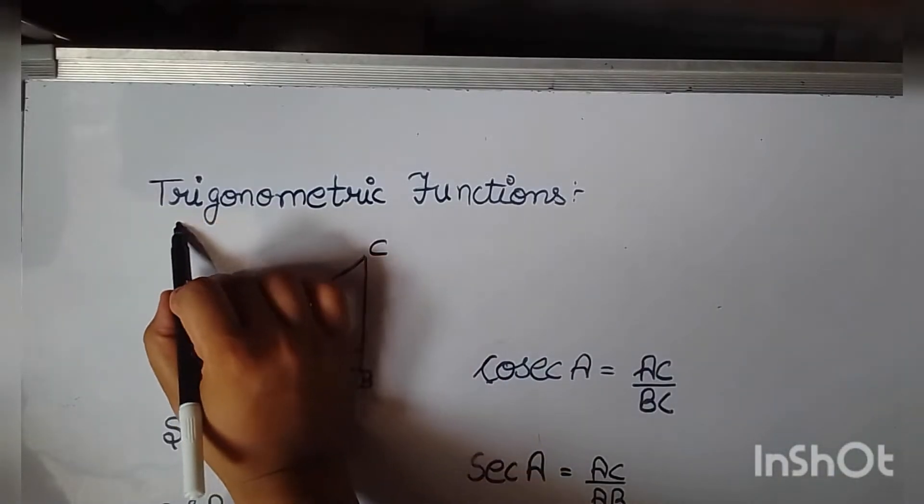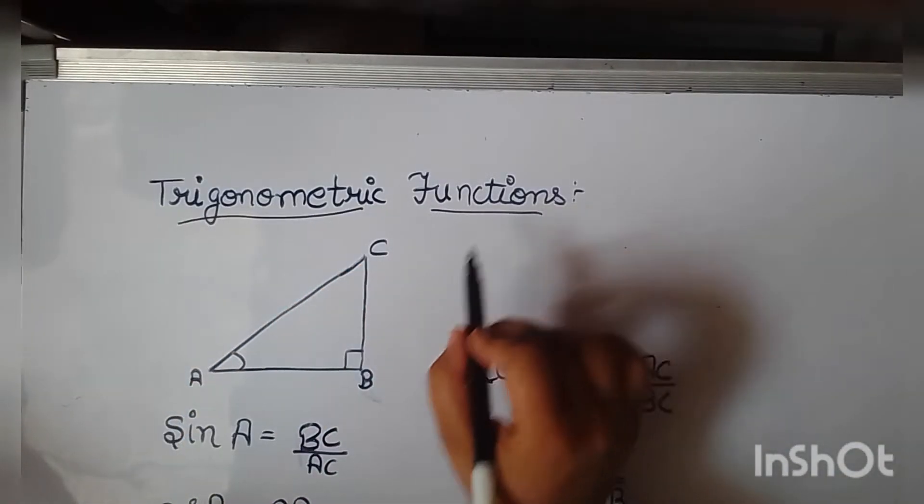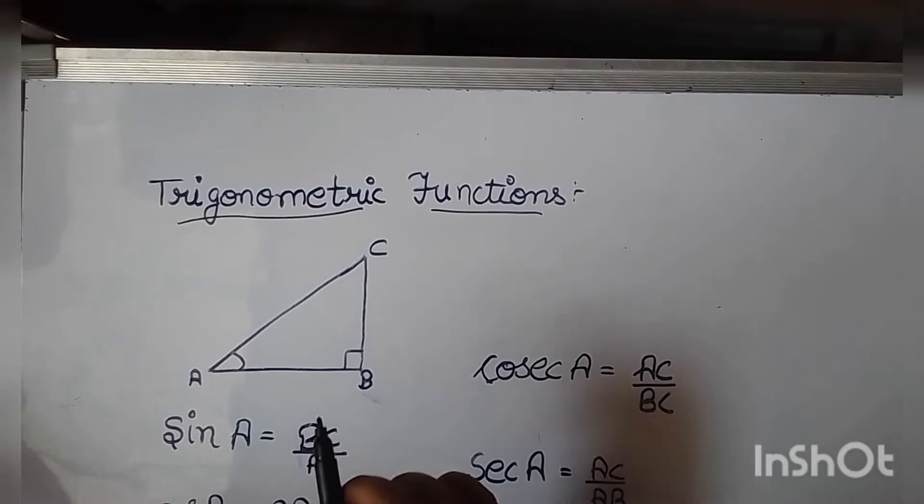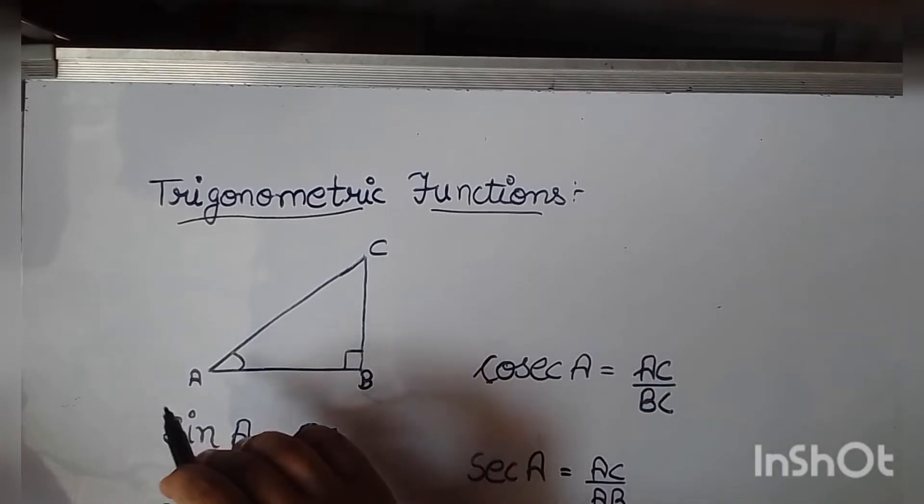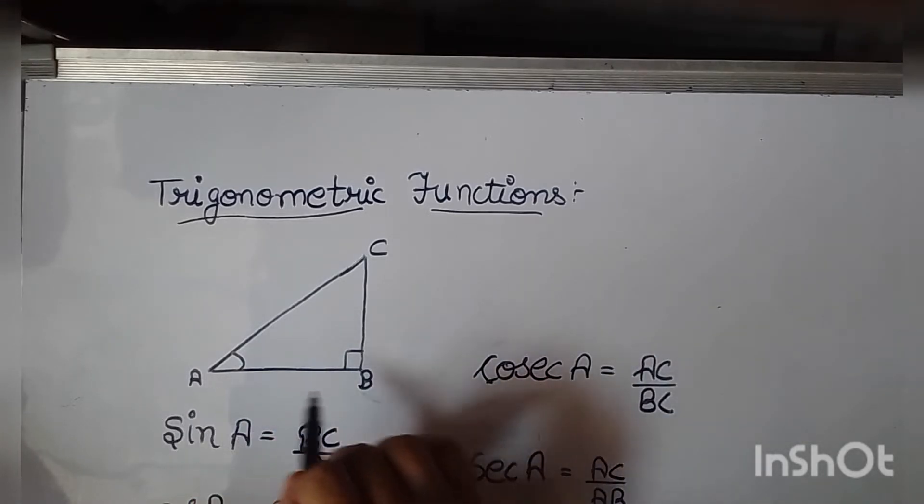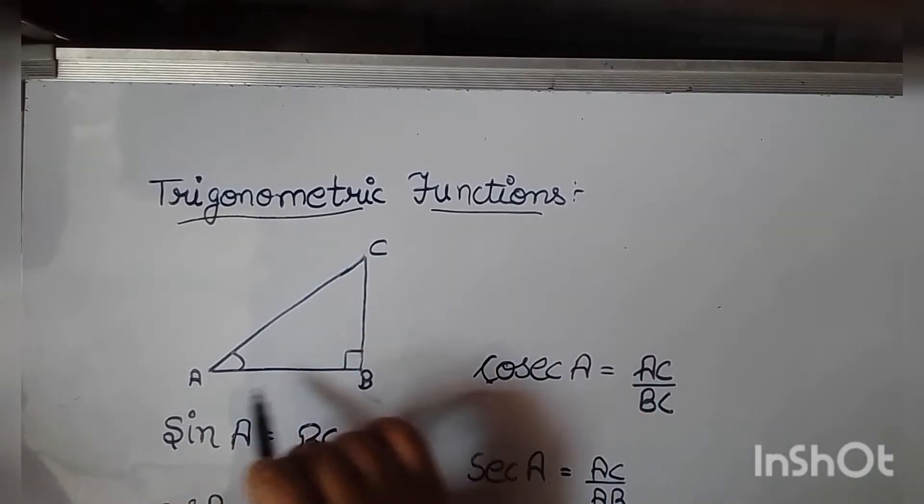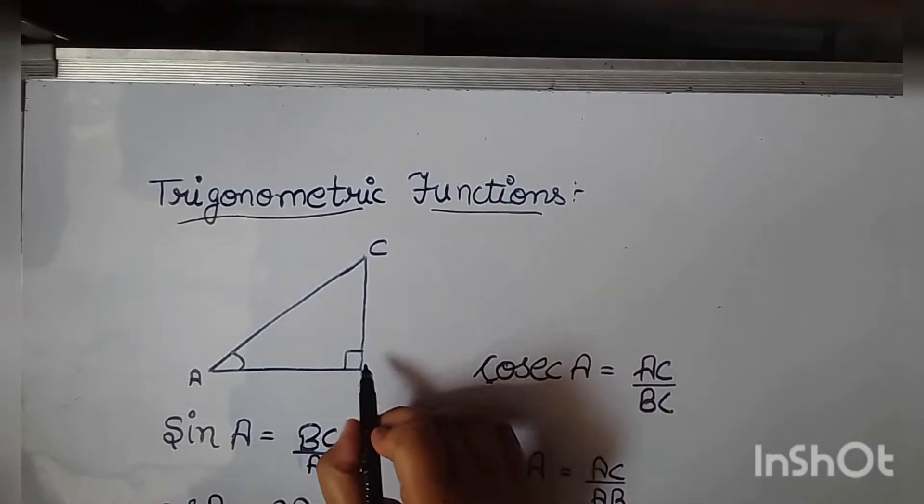Today we discuss trigonometric functions. Here we discuss a right angle triangle. Let ABC be a right angle triangle having a right angle at B.